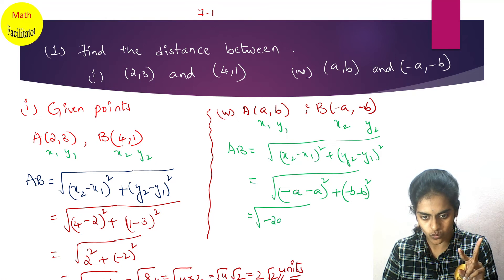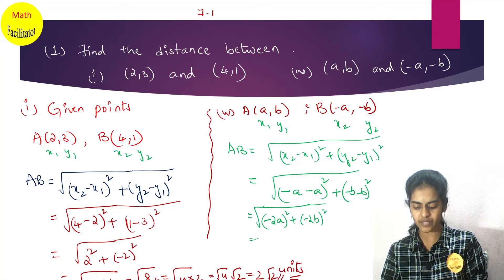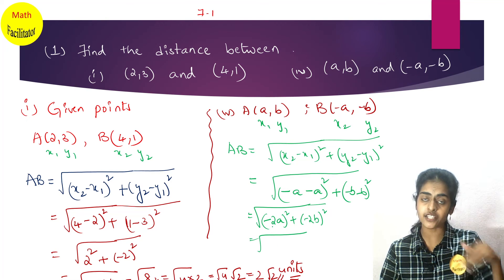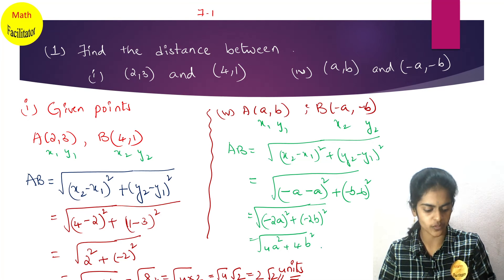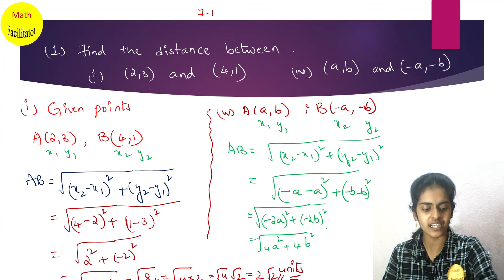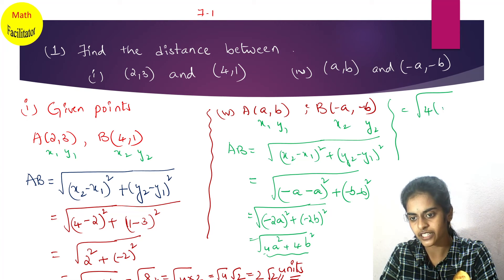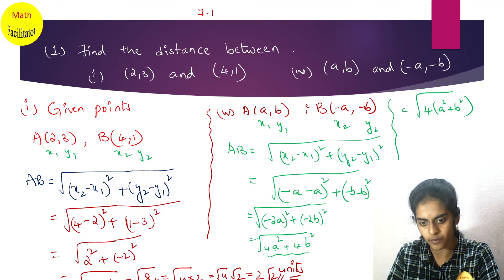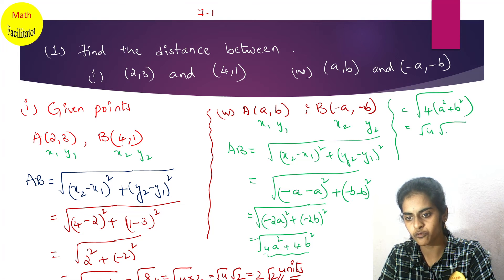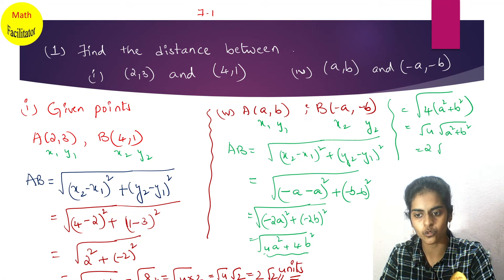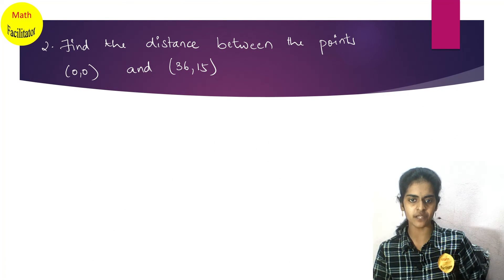Substituting: (minus a minus a) = minus 2a whole square, plus (minus b minus b) = minus 2b whole square. This gives root of (4a² + 4b²). Taking 4 as common: root of 4(a² + b²) = root 4 × root(a² + b²) = 2√(a² + b²) units.